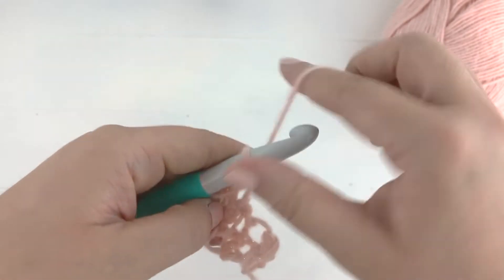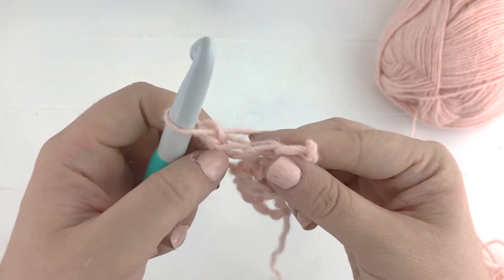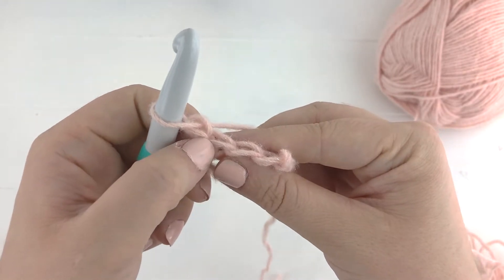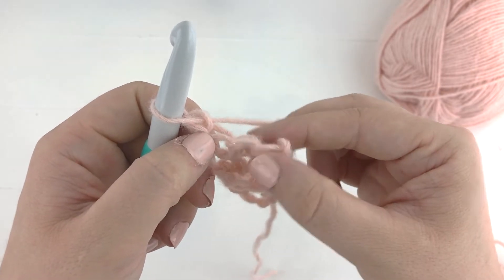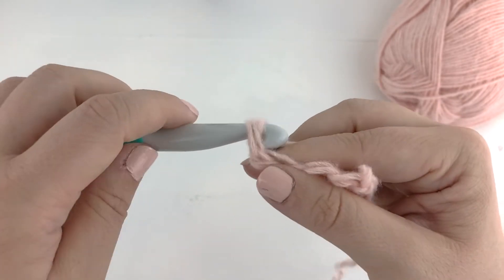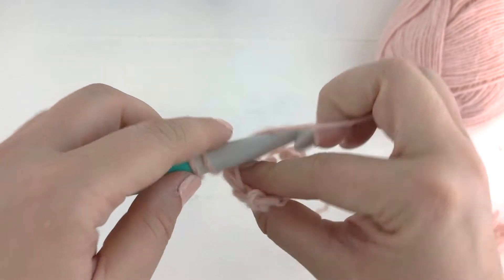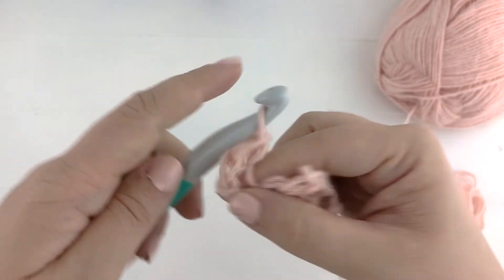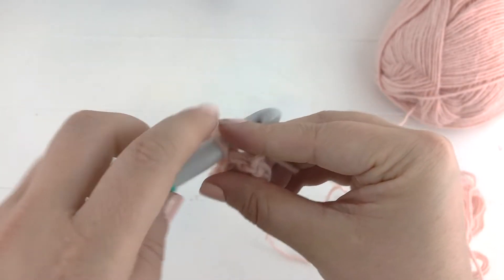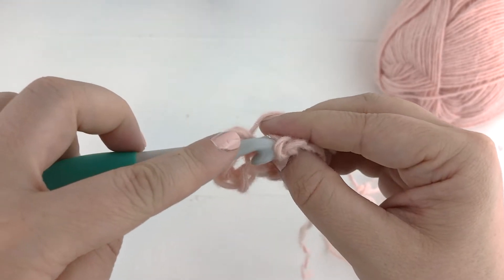Chain one and turn. For row five, being an odd row, we are going to work two single crochet into the first stitch in the back loops only, always in the back loops only, and then a single crochet in every stitch across. So you will always increase in the first stitch of all the odd rows.